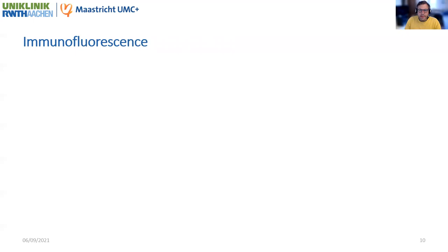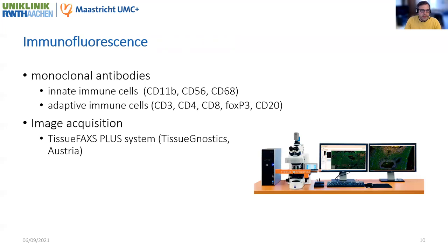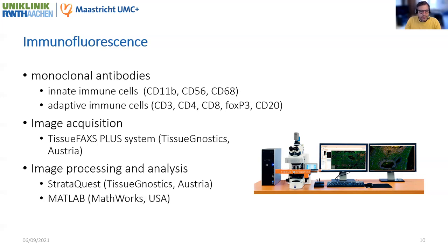With double stainings and monoclonal antibodies, we studied the innate immune cells — CD11b for myeloid cells, CD56 for natural killer cells, CD68 for macrophages — and adaptive immune cells — CD3 for T cells, CD4 for T helper cells, CD8 for cytotoxic T cells, FOXP3 for T regulatory cells, and CD20 for B cells. Image acquisition was done with the TissueFax Plus system, an upright fluorescence and bright field system for scanning. Image processing and analysis was done with the StrataQuest analysis software and with MATLAB.